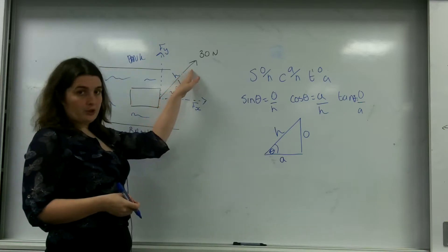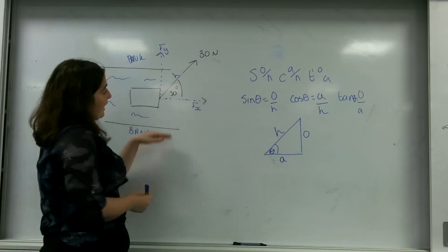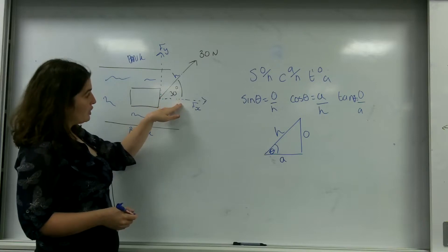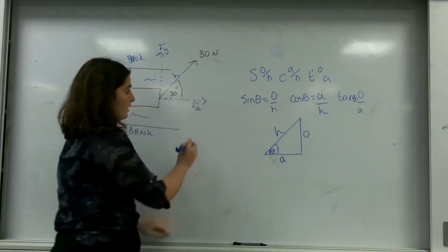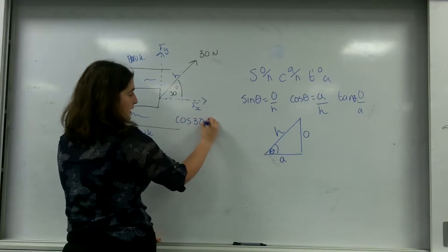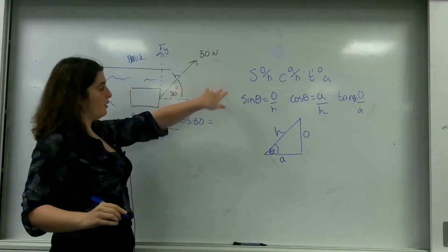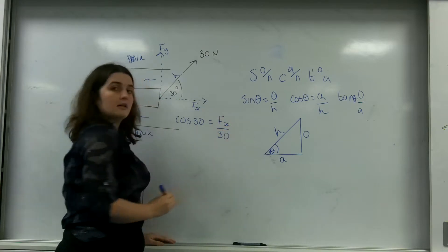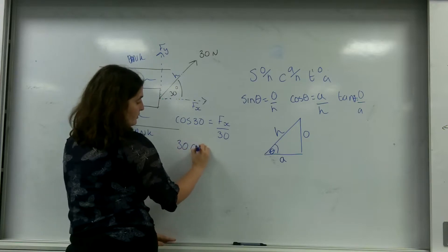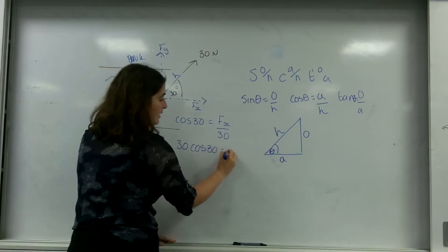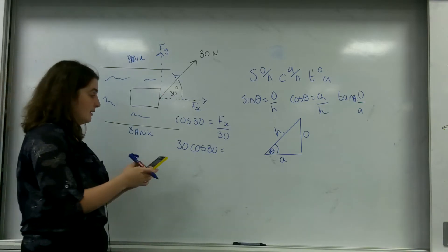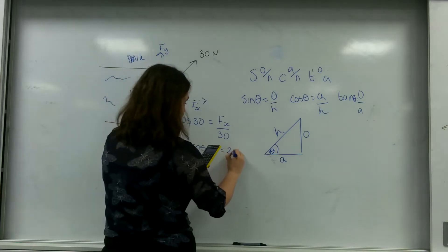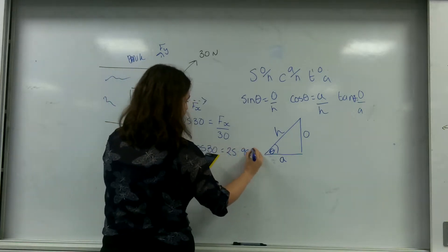So this is my hypotenuse of the triangle, and this is my x-direction. I've got my adjacent and my hypotenuse, so I'm going to use cosine. Cos 30 equals my adjacent, which is Fx, over 30. So 30 cos 30 equals — grabbing a calculator — 25.98 newtons.